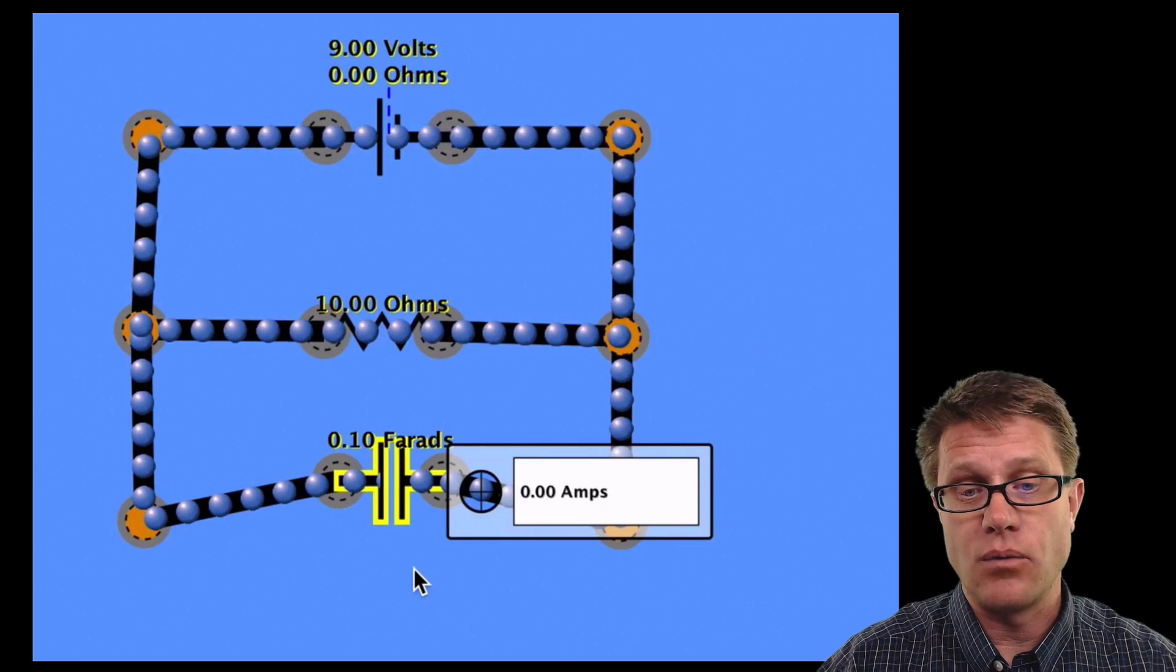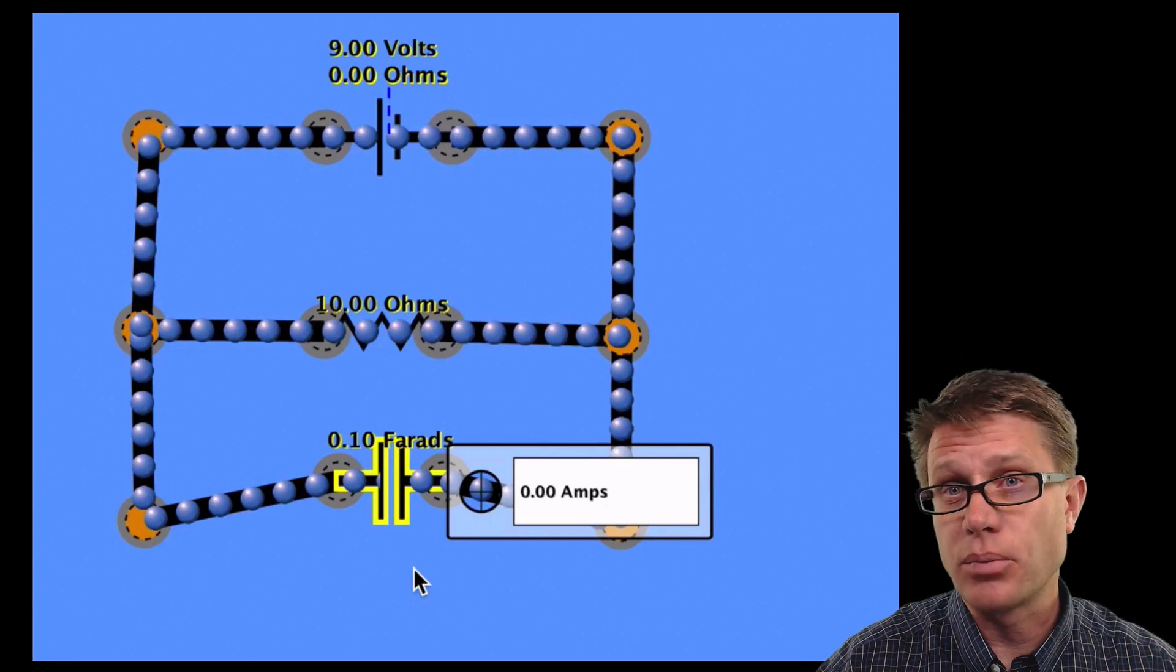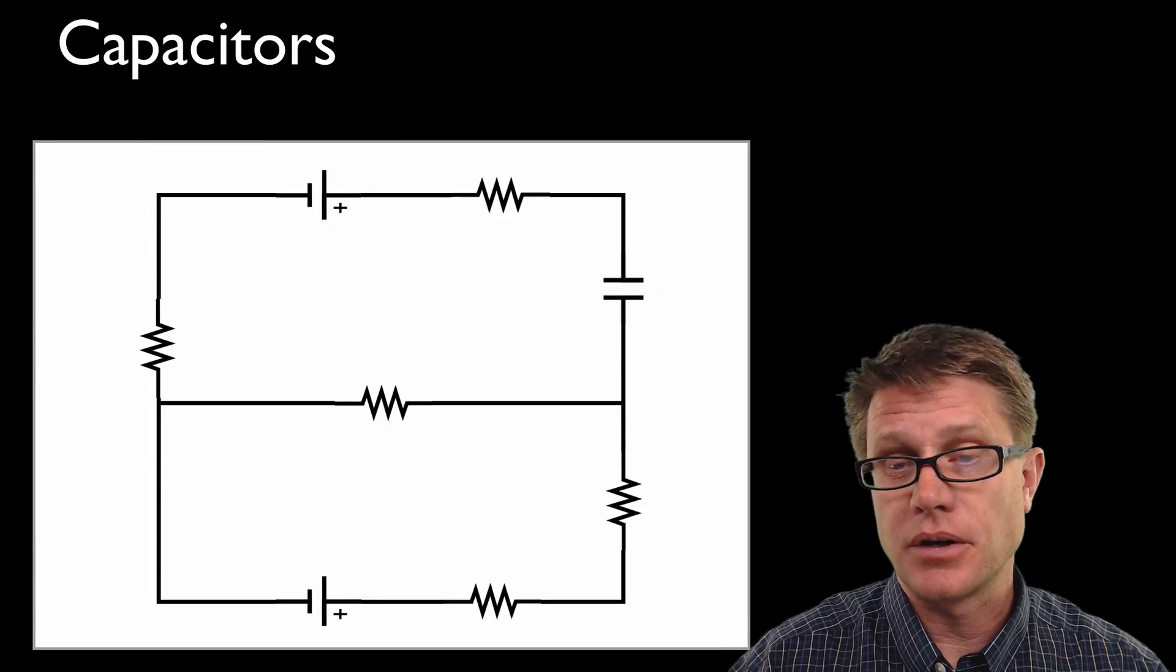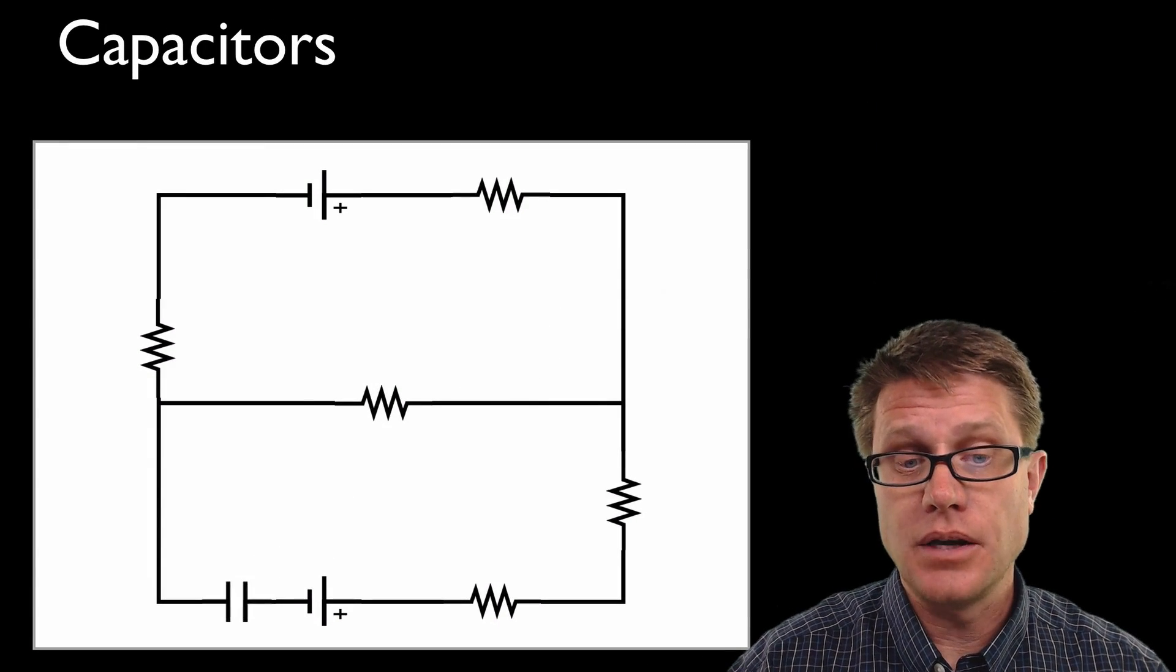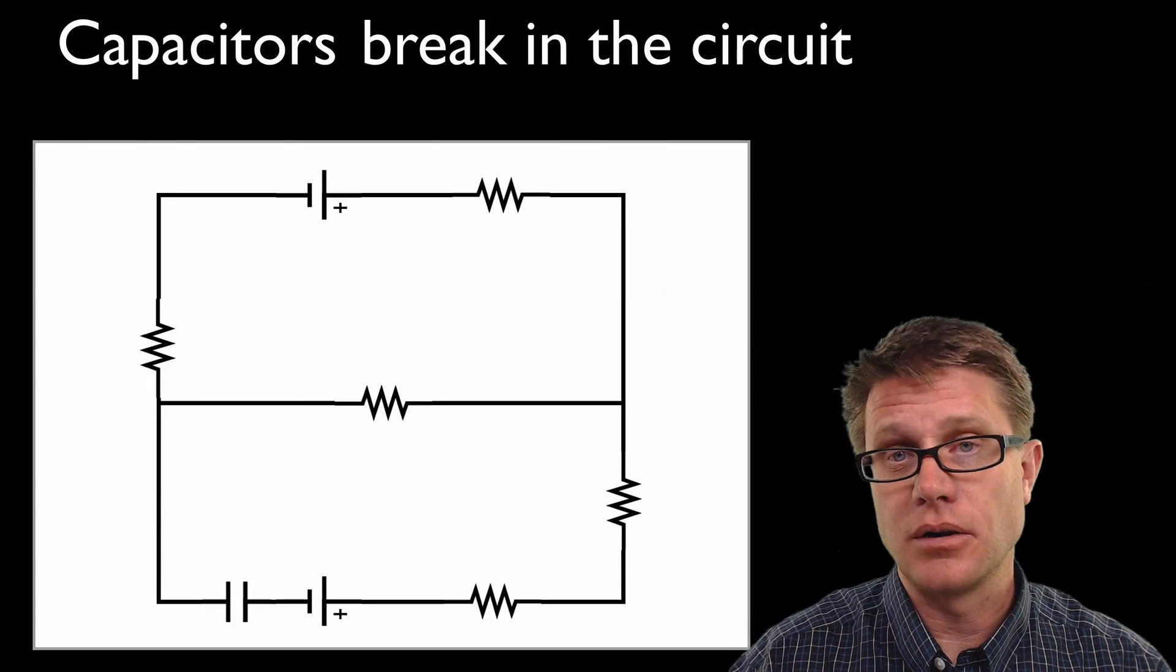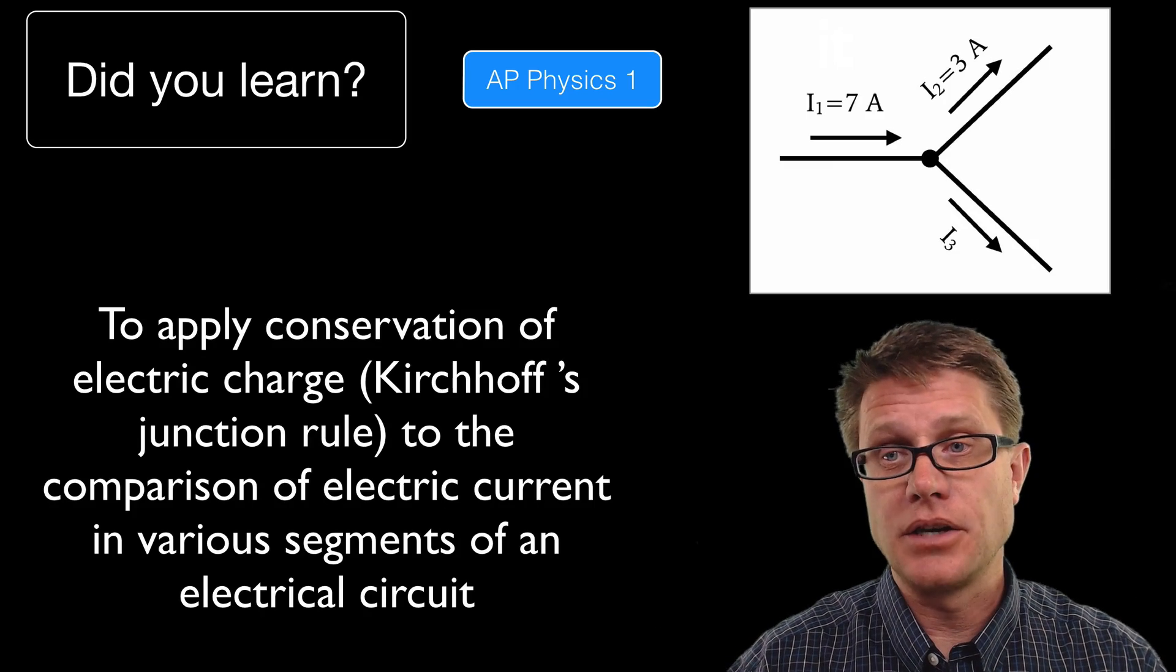But you can see that that charge stops. It is acting like a dam inside that water. And so you can think of a capacitor just like a break in a circuit when we are applying Kirchhoff's junction rule. So if I put a capacitor here or here it is going to be a break in that circuit. There is not going to be any current flowing through that branch of the circuit.